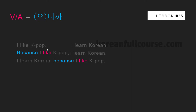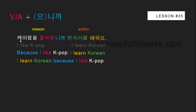Here, the reason is 'I like K-pop.' So, the reason why I learn Korean is because I like K-pop. In Korean, we start a sentence with the reason: verb stem plus 니까 because the verb stem ends with a vowel. After that, we attach the action — 한국어를 배워요. So: 'K-pop을 좋아하니까 한국어를 배워요.' Again, in Korean you cannot change the sentence order.